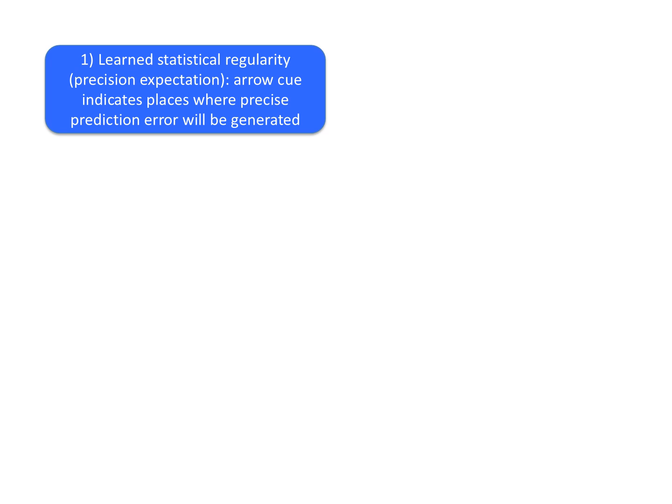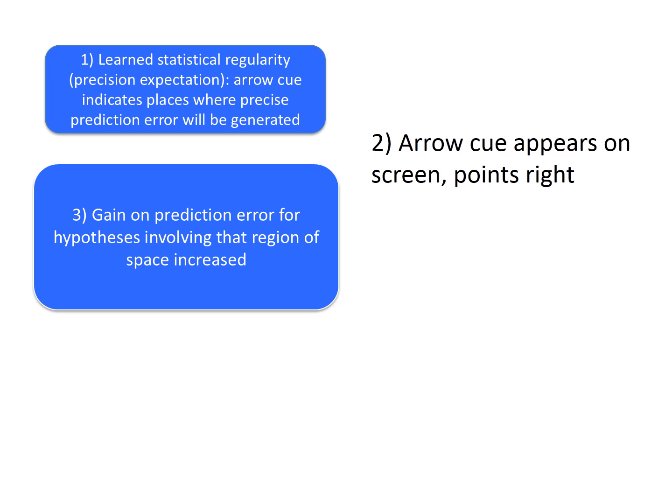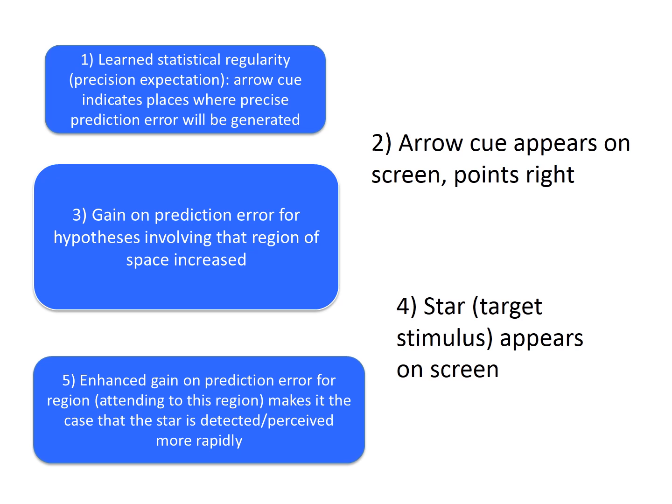First, we have a precision expectation that the arrow cue indicates places where precise prediction error will be generated. Second, the arrow appears on the screen, in this case pointing right. Third, the gain on prediction error for hypotheses involving that region of space is increased. Four, the star appears on the screen. Five, enhanced gain on prediction error for this region, which just is attending to this region, makes it the case that the star is detected or perceived more rapidly.